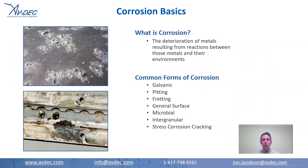We'll start off first with a little corrosion basics. What is corrosion? Corrosion is a deterioration of metals resulting from a reaction between those metals and their environments. It has a white powdery appearance to it. Some of the common forms of corrosion are galvanic, pitting, fretting, general surface, microbial — which typically occurs in your fuel tanks — intergranular, and stress corrosion cracking.